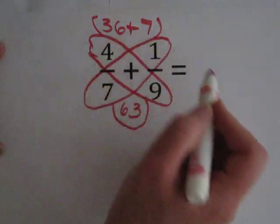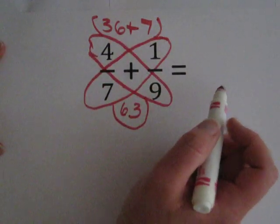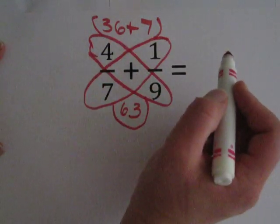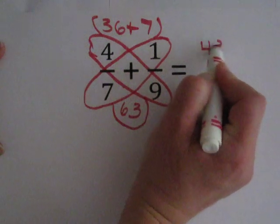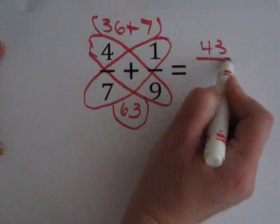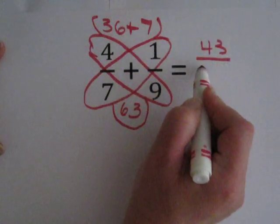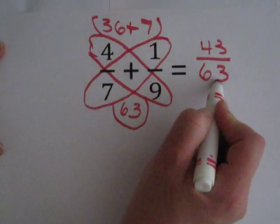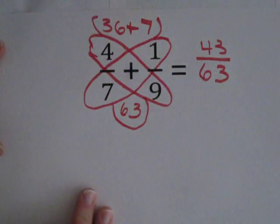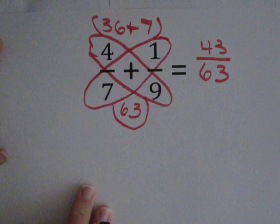36 plus 7 is 43, over 63. And that can't be reduced, so that is the final answer to that addition.